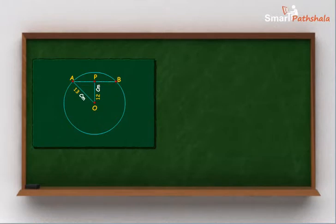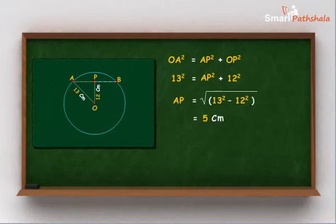Let AB be the chord and OP be the perpendicular. Then in triangle OAP, OA square is equal to AP square plus OP square, or AP is equal to 5 cm. We know that the perpendicular drawn from the center of the circle bisects the chord. Hence, the length of the chord AB is 10 cm.